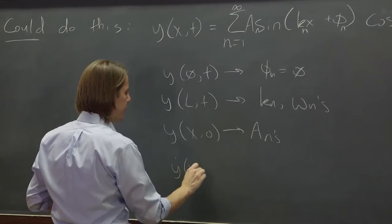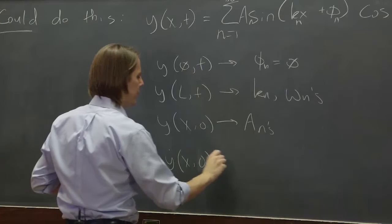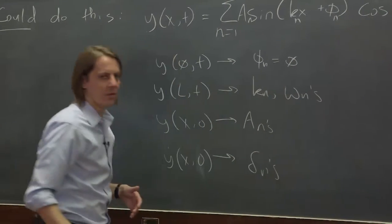So maybe we use the velocity, y dot, the initial velocity x zero, to get the d_n's.